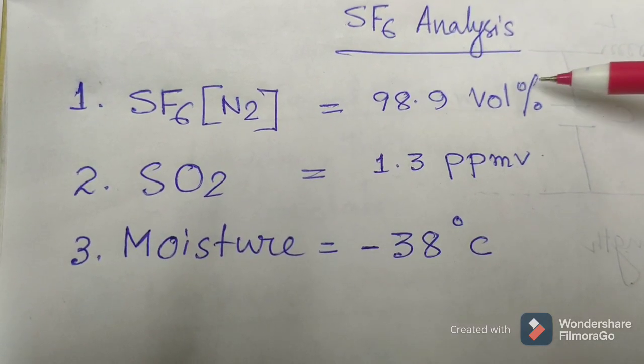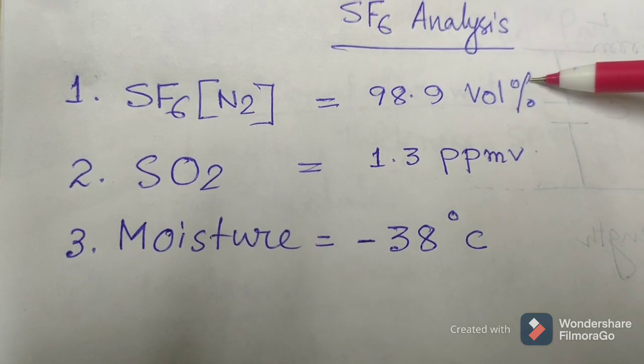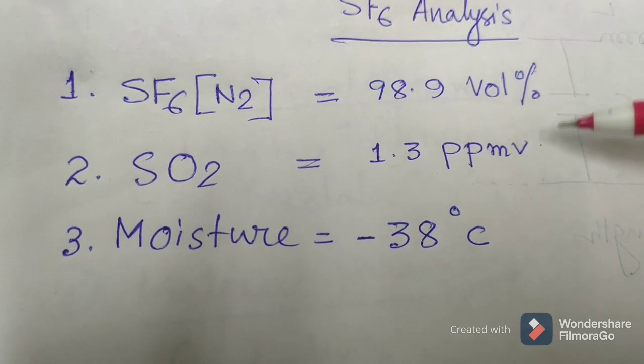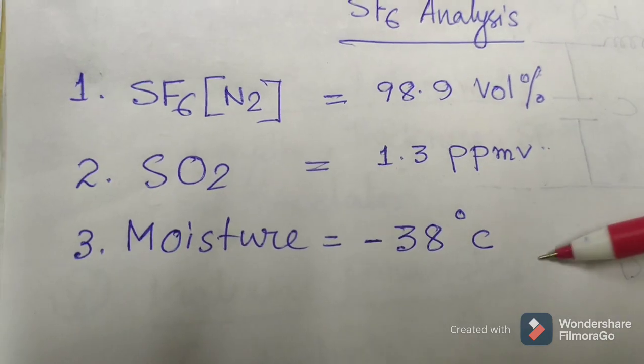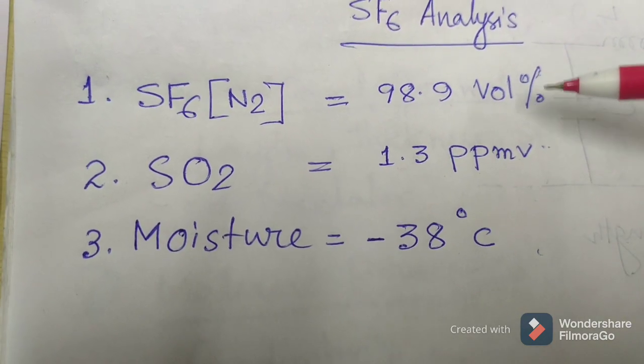The three main parameters are SF6 quantity in percentage volume, SO2 in ppm, and moisture, calculated by the SF6 analysis.